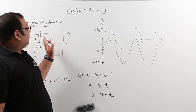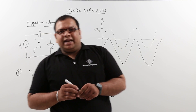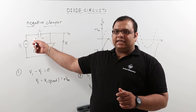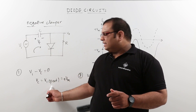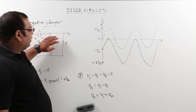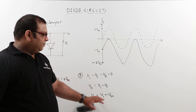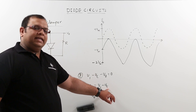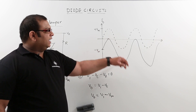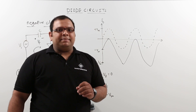In the analysis of a clamper circuit, we always follow these steps: first, identify when the diode is conducting and find the peak voltage at which the capacitor charges. Then, with the diode open, find the output-input relation, substitute the value of Vc, and use that equation to draw the output waveform. This completes the analysis of the negative clamper circuit.